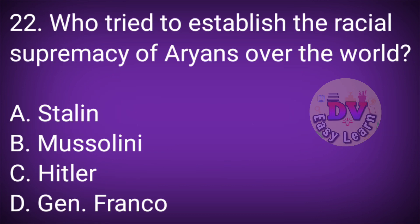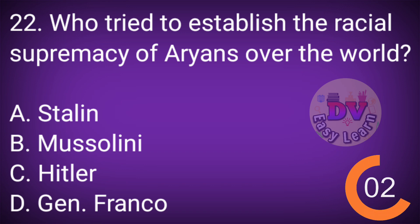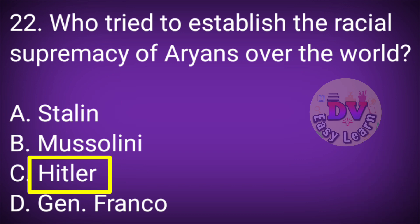Question No. 22: Who tried to establish the racial supremacy of Aryans over the world? Correct answer: Hitler.